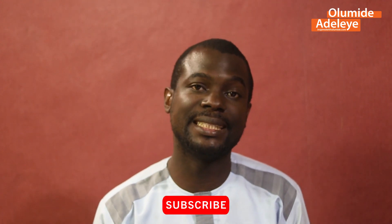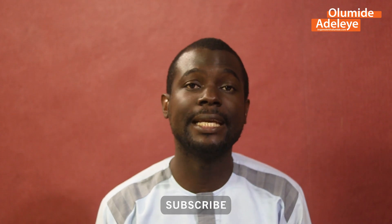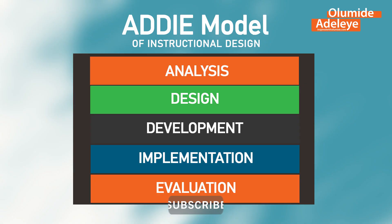ADDIE is actually five steps. There is A, D, D, I, and E. The A stands for Analyze, the first D stands for Design, the other D stands for Develop, I stands for Implement, and E stands for Evaluate.